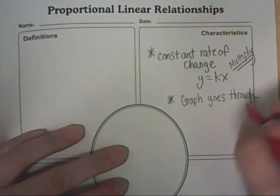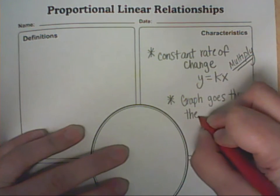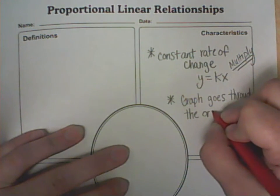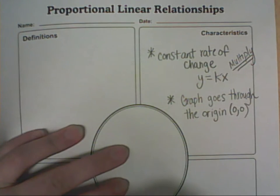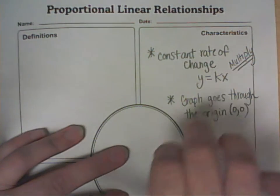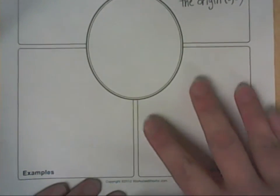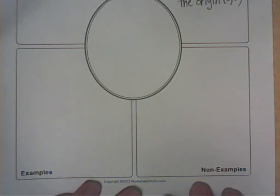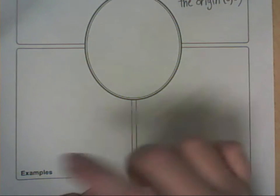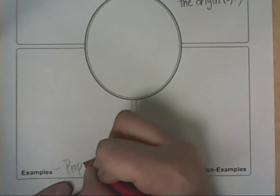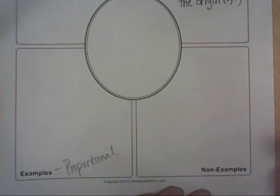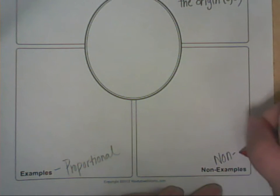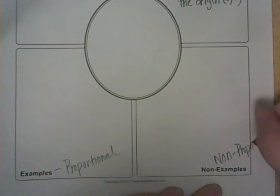That's a real easy way to check to see if it is proportional or non-proportional — make sure it goes through the origin (0, 0). So let's go ahead and take a look at what the graph looks like. We have a section of our paper for the examples, which are the ones that are proportional, and a section for the non-examples. The vocabulary for that is non-proportional, which means not proportional.